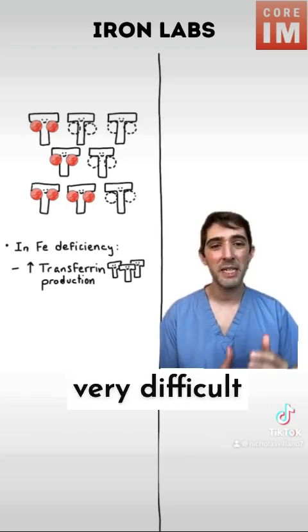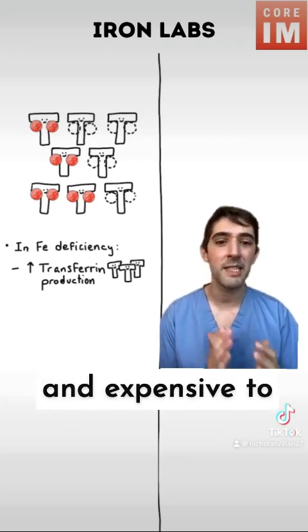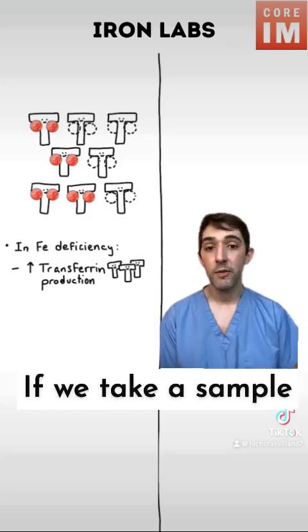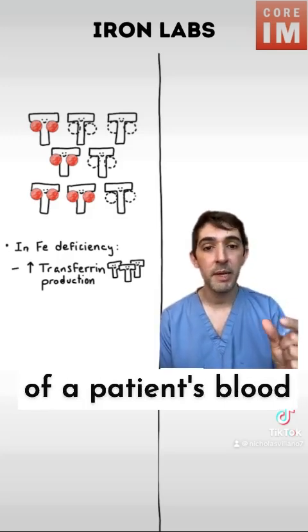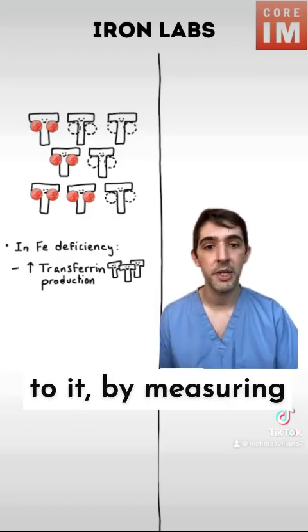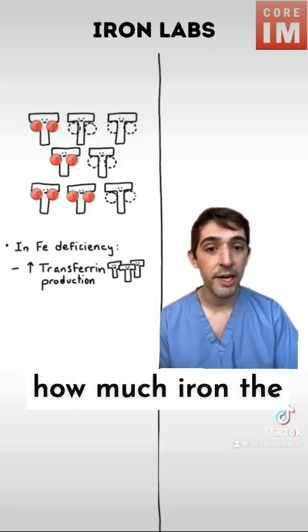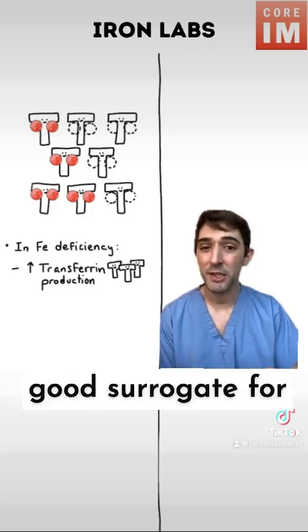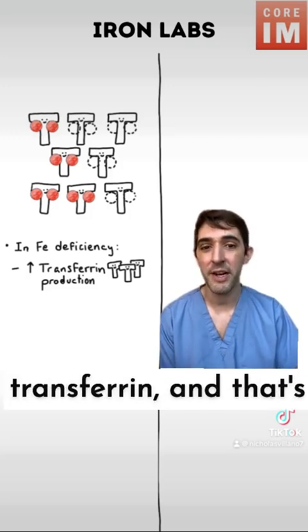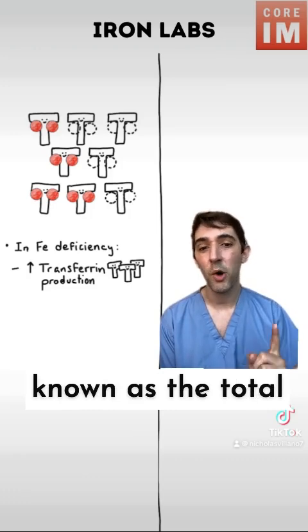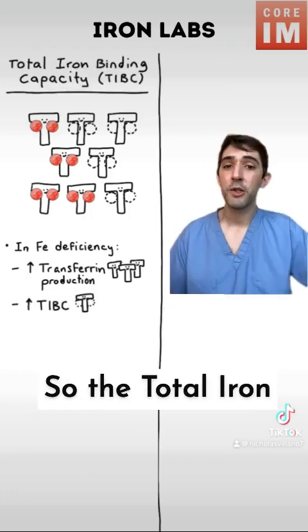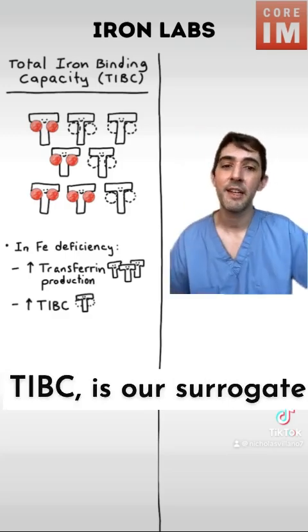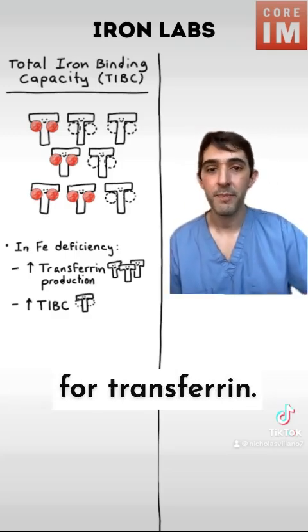Unfortunately, transferrin is very difficult and expensive to measure directly. But we have found a way around this. If we take a sample of a patient's blood and start adding iron to it, by measuring how much iron the blood can hold, we get a number that's a pretty good surrogate for transferrin, and that's known as the total iron binding capacity, or TIBC.